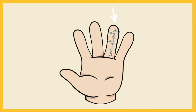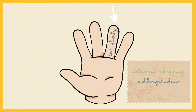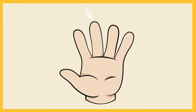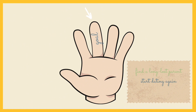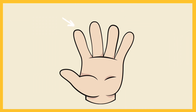Moving on to the ring finger, you'll introduce the 'somebody' of your story. Forget names — provide quick character context. Are they a 16-year-old runaway, a middle-aged widower, or maybe a single ambitious exec? This finger sets the stage for your protagonist. The middle finger is all about desires and goals. What does your main character want? It could be to find a long-lost parent, start dating again, or land a huge account. This finger encapsulates their driving force.